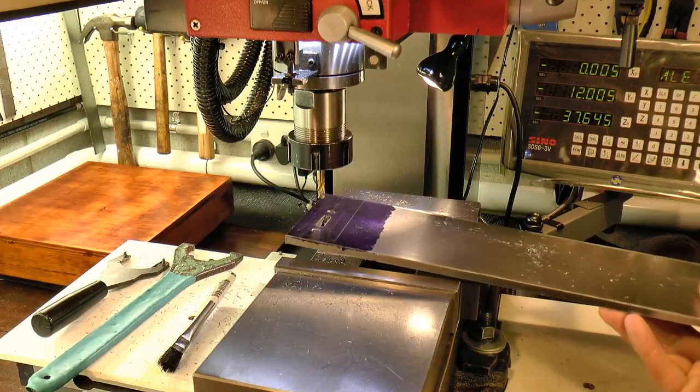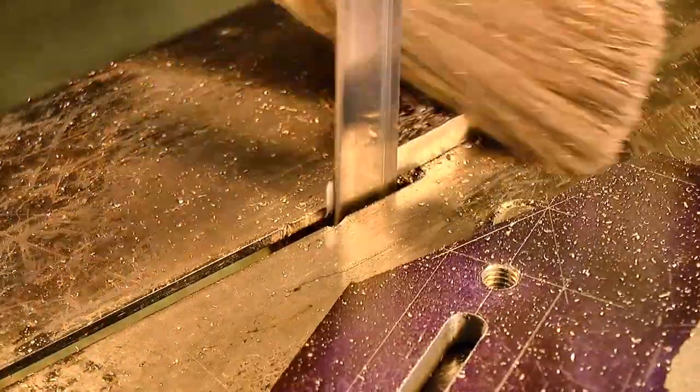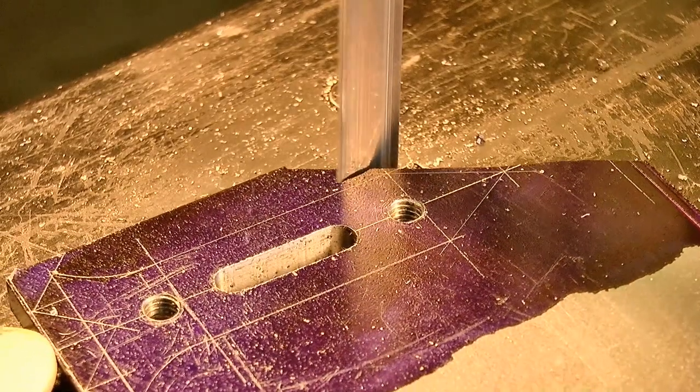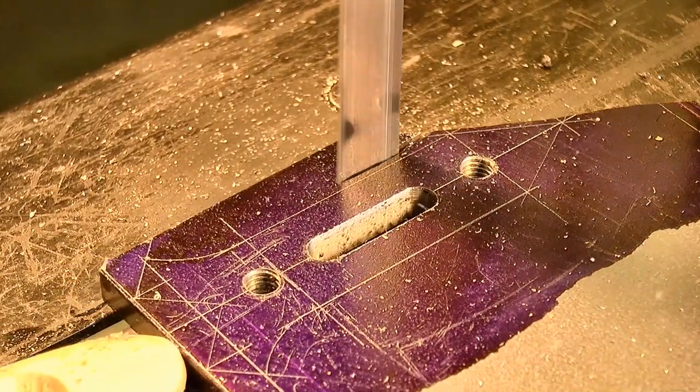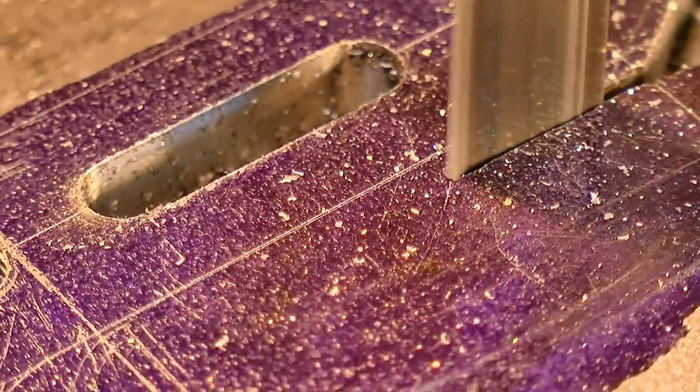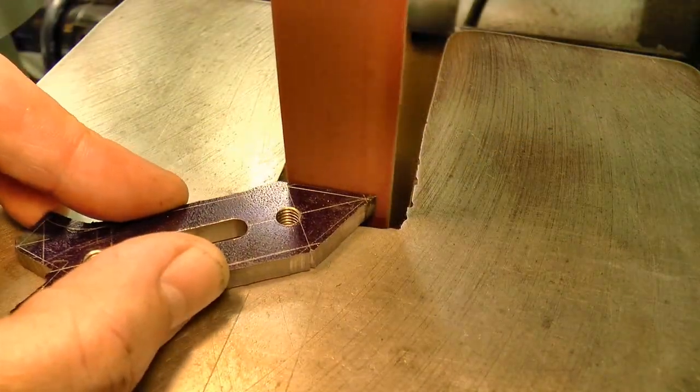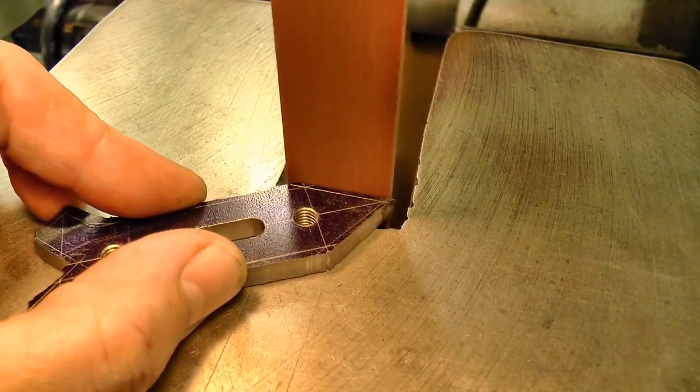So that's the inside cutting complete, now for the edges. The band saw takes care of most of the waste stock, and I used the belt sander on the filing machine to bring it closer to the line.